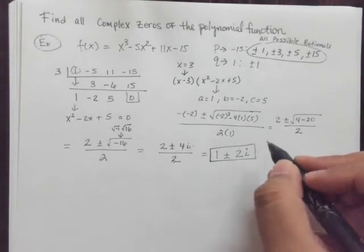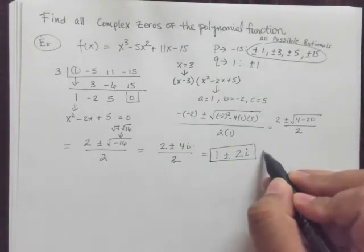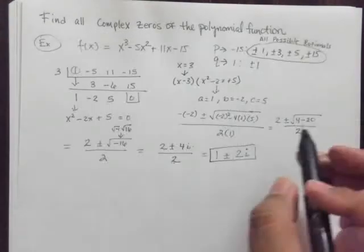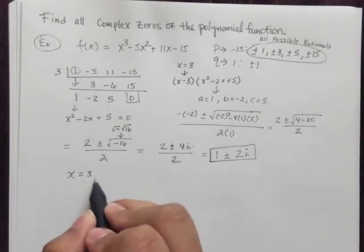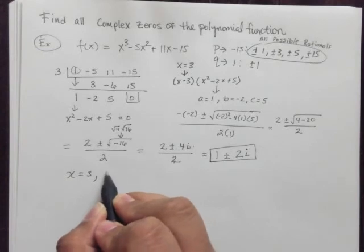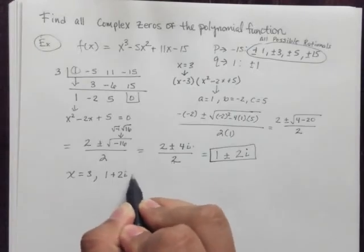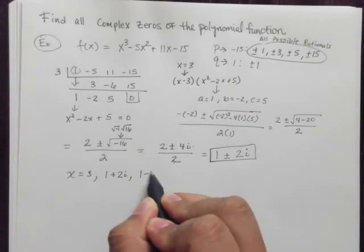So the other zero, of course, being x equals 3. So I'm going to actually list them all together now that I think about it. x equals 3, x equals 1 plus 2i, and then, of course, x equals 1 minus 2i.